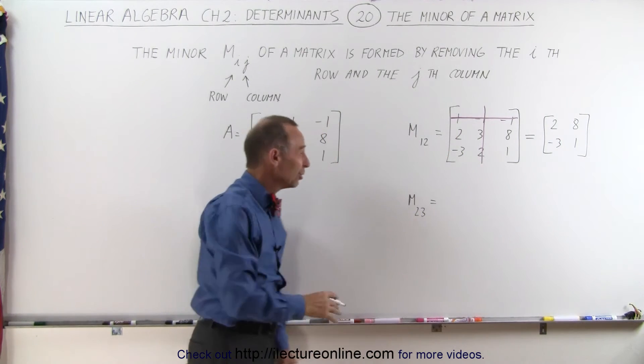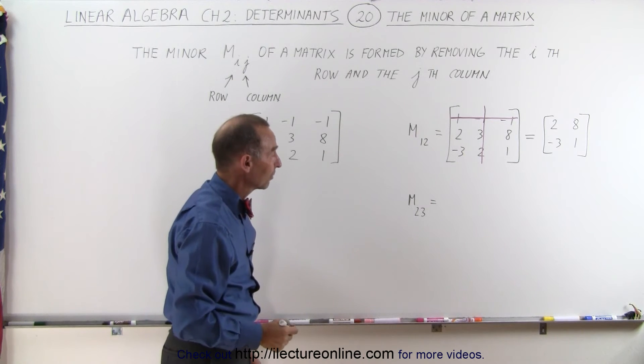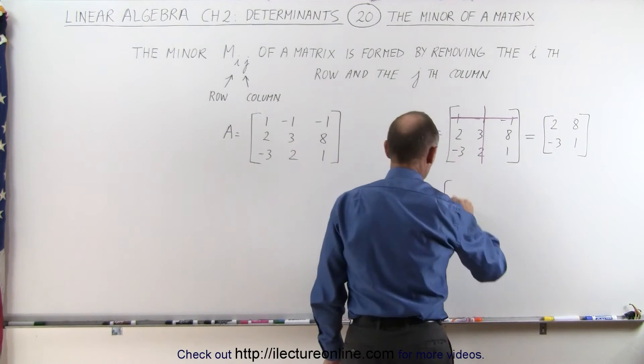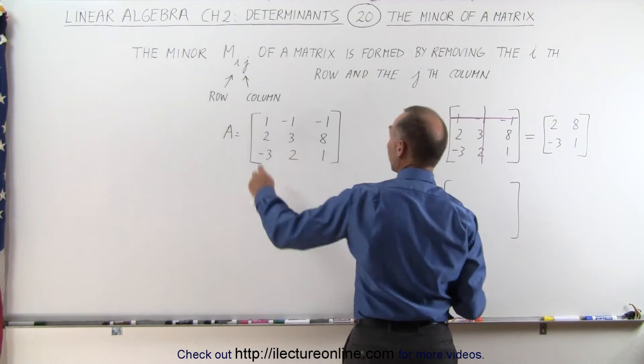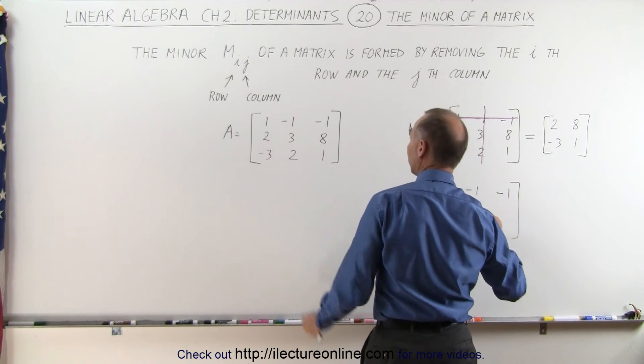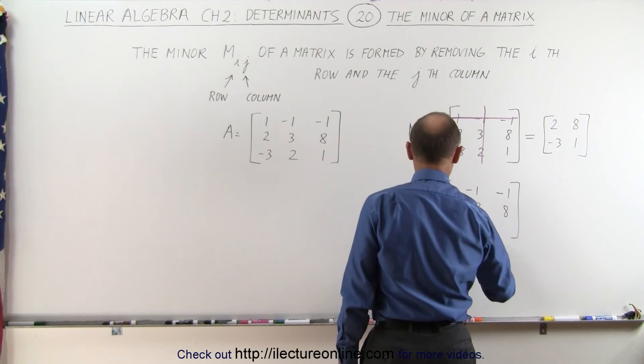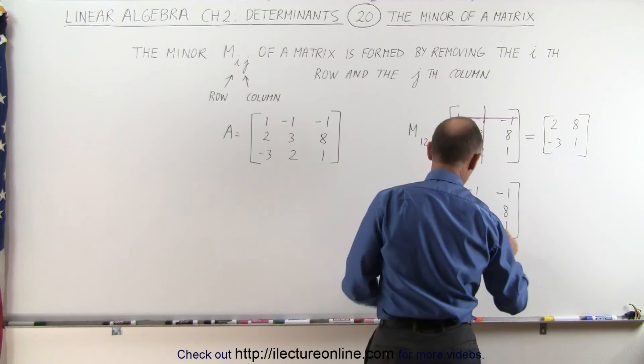Let's do it again and by the time we do the second one I think you'll figure it out, you'll understand how to do this. So again we're going to copy the original matrix A which is 1, -1, -1, 2, 3, and 8, and the third row -3, 2, and 1.